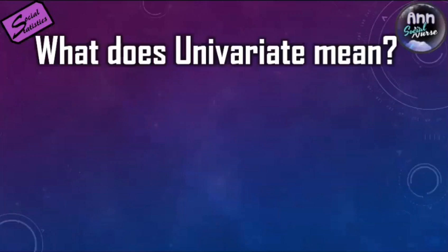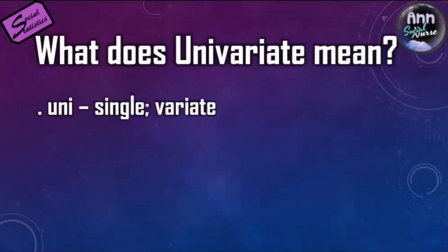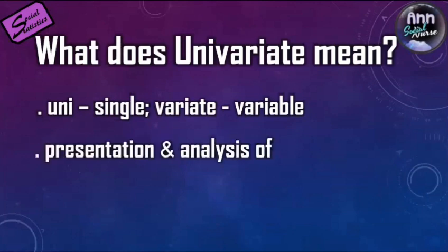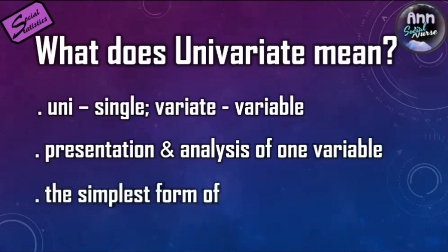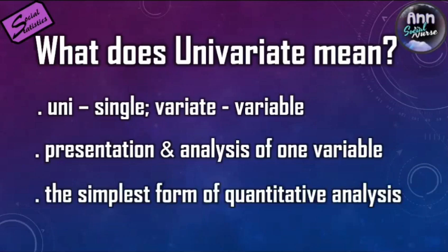Now what does univariate mean? It's from two words: uni and variate. Uni means single, while variate is the root word for variable. We already know what a variable is, and here we're going to learn the presentation and analysis of one variable. It is actually the simplest form of quantitative analysis when you're going to present and analyze only a single variable.